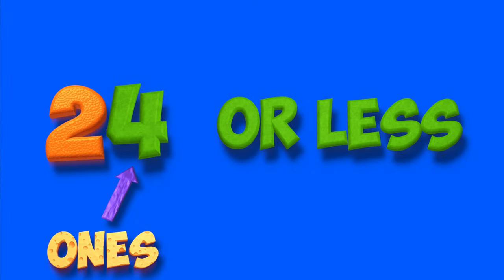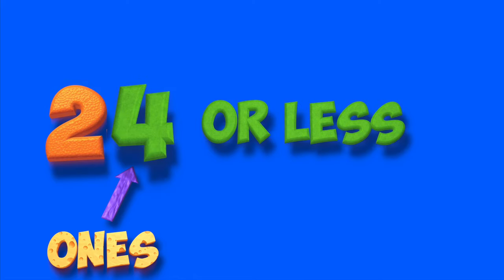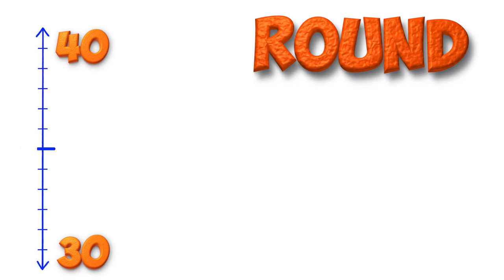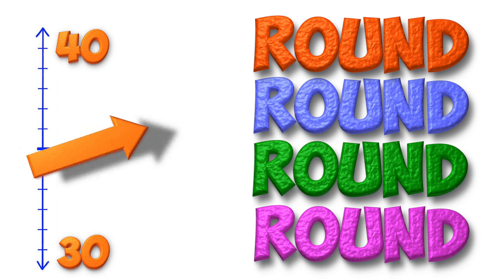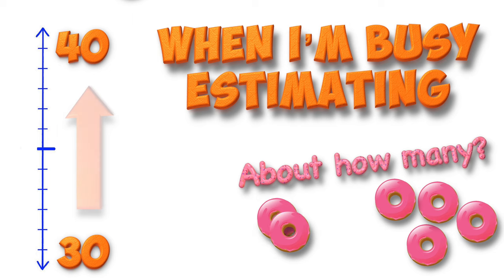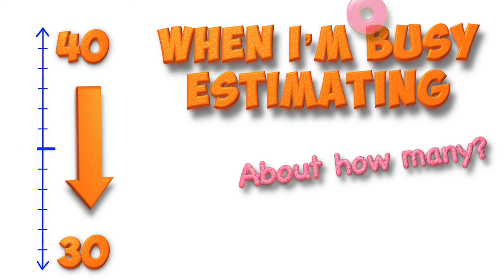If you see four or less in the ones place — 4, 3, 2, don't forget 1 — if you see four or less in the ones place, the tens stay the same, then you're done. The tens stay the same, then you're done. Round, round, round and round. I'm rounding up or rounding down. When I'm busy estimating, I'm rounding up or rounding down.